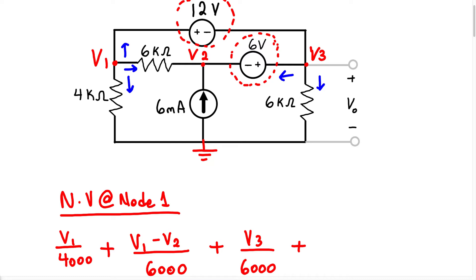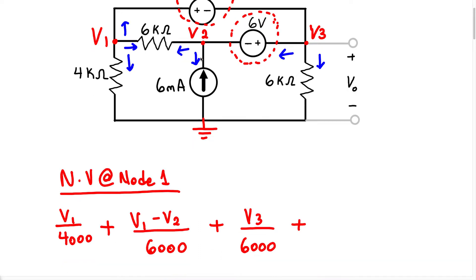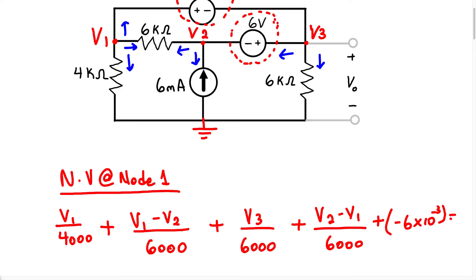We have a problem where we have two super nodes in one problem. We're going to ignore this voltage source for the moment and look at node 2, which is the second node containing a voltage source. We assume the current goes in this direction and this direction. So we have V2 minus V1 over 6,000, plus this current source entering the node, treated as negative 6 times 10 to the negative 3, and all of that equals 0.